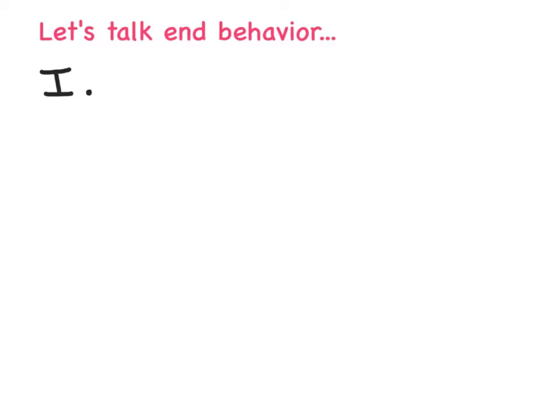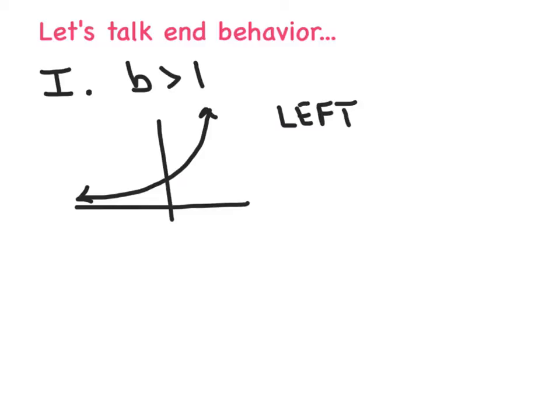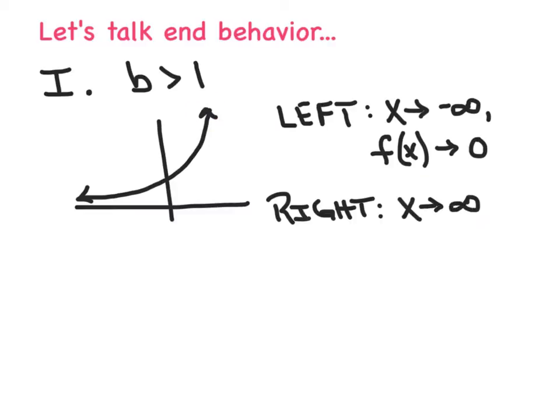There's two cases I want to examine. Case number one, what is the end behavior like if b is greater than 1? In other words, if the graph looks like this. Let's talk about the far left side, in other words, the left end behavior, which is this area right down here. And what I would say is as x approaches negative infinity, f of x, which represents the height of the function, approaches 0, or a.k.a. the x-axis. Now, if I talk about the right end behavior, which now we're focusing on this end of the graph, we'd say as x approaches positive infinity, f of x, which again represents the height of the function, is approaching infinity because it's going upwards.